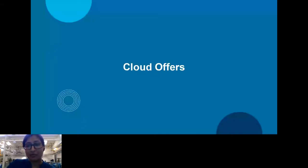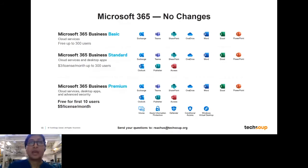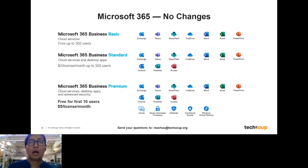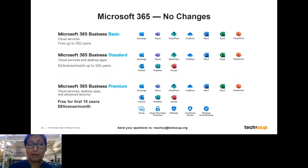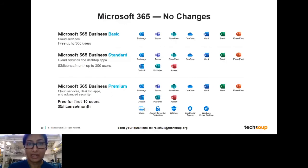Before we get into questions, I want to quickly talk about the different cloud offers available from Microsoft — and to reiterate, there are no changes to these. They exist today, will exist tomorrow, and will exist in January and April as well. The first is Microsoft 365 Business Basic, available as a donation to all nonprofits for up to 300 users. It does not include desktop applications, so you'll need an internet connection, but it includes Exchange, Teams, SharePoint, Word, Excel, PowerPoint, and OneDrive for storage.